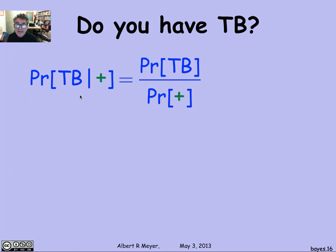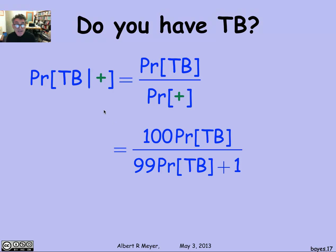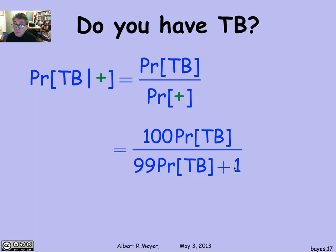We were computing the probability that you have TB given the test came in positive. We found it equals the probability of TB divided by the denominator, which is (99/100) times the probability of TB plus 1/100. Multiplying numerator and denominator through by 100 gives: the probability that you have TB given that the test says you do equals 100 times the probability of TB divided by 99 times the probability of TB plus 1.